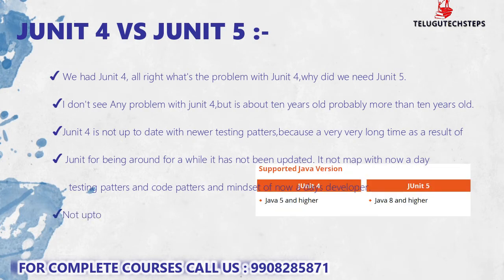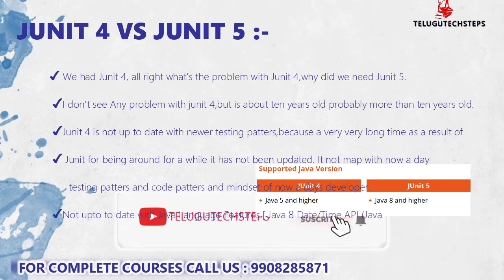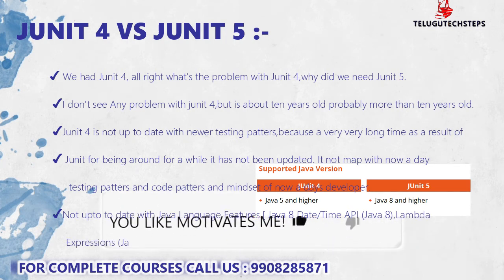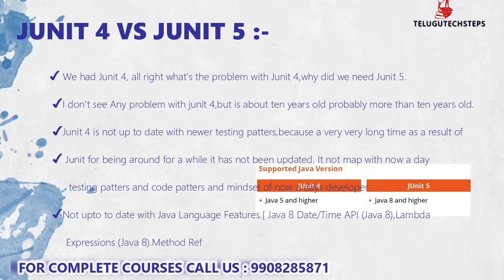Most importantly, JUnit4 is not up to date with Java's new features. Over 10 years, Java has had extremely high-level updates. For example, Java 8 introduced date and time, lambda expressions, method references, and functional interfaces. There are so many new features happening in Java, but JUnit4 is not mapped or updated with Java's new features.